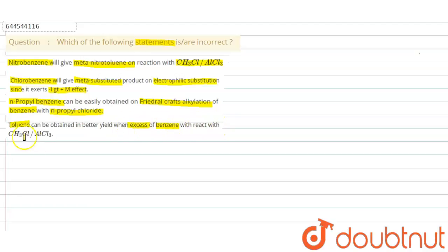Now if we come to option number one, or statement one, we have nitrobenzene. This nitro group is highly electron withdrawing group. NO2, this is electron withdrawing group.